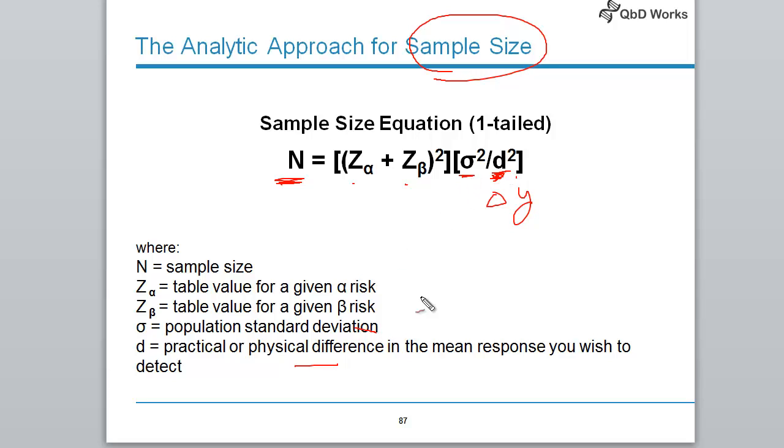Then you need to know the population standard deviation, which is unknown because you have not run enough sample studies already in the sampling. So that's an assumption.